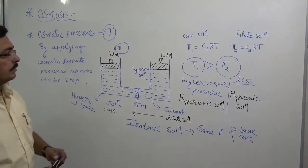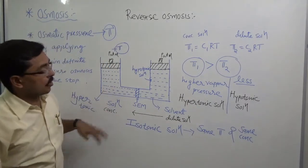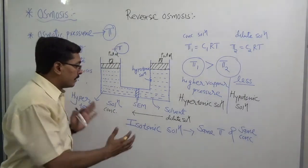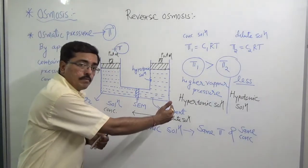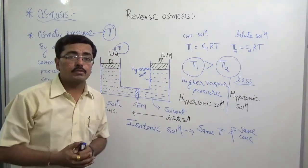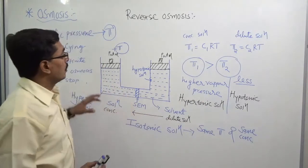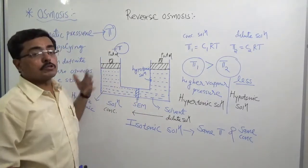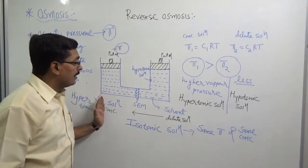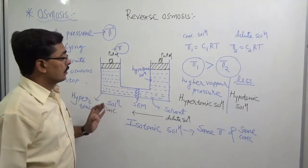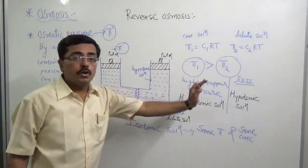Now, reverse osmosis phenomena is totally opposite to osmosis. In osmosis, solvent flows from dilute solution to concentrated solution through a semi-permeable membrane. But by applying a pressure greater than the osmotic pressure on the concentrated solution side, the solvent molecule will flow in the opposite direction — from concentrated solution to dilute solution.